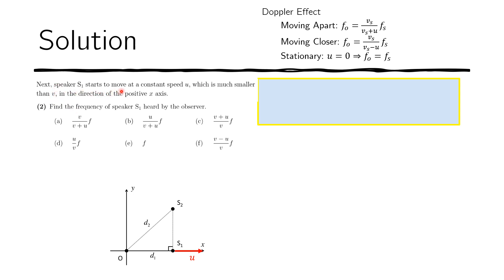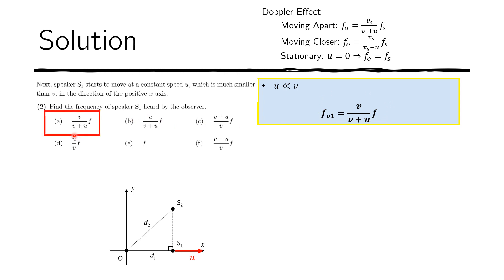Next, speaker S1 starts moving at constant speed U, much smaller than V, in the direction of the positive X axis. We need to find the frequency of S1 heard by the observer. Since the source and observer are moving apart, we apply the Doppler formula for separation: the observed frequency equals f times V over (V plus U).